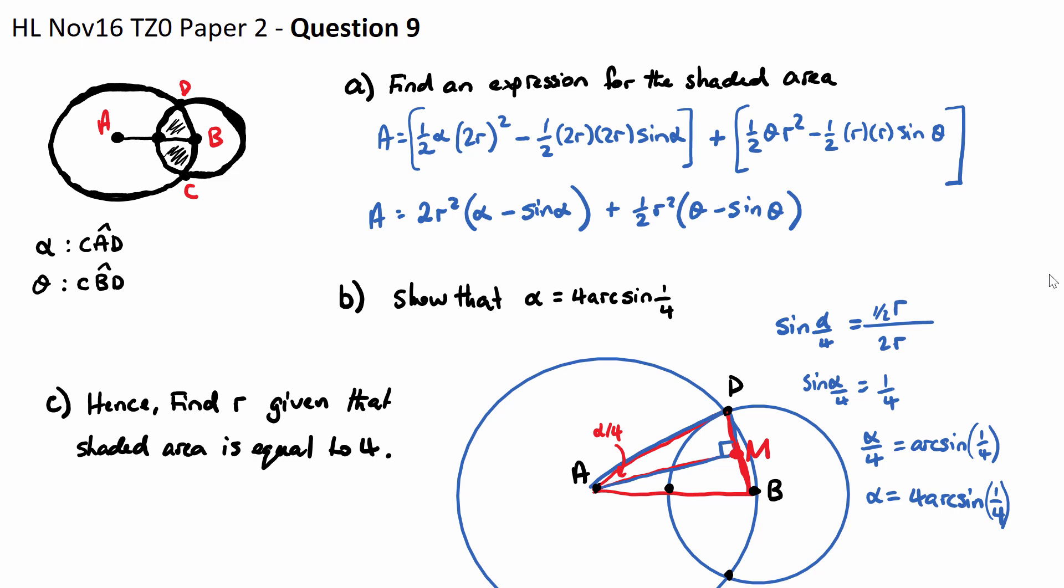In question 9 part C, hence find the value of R given the shaded area is equal to 4. So we need to use the area equation from part A, which was this one here. We now know an expression for alpha. Alpha is just 4 arc sine 1 on 4. So if we sub in 4 for our area and alpha is arc sine 1 on 4, now we can try and solve for R.